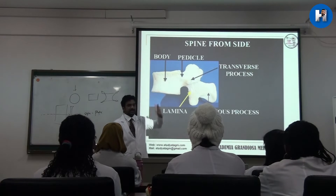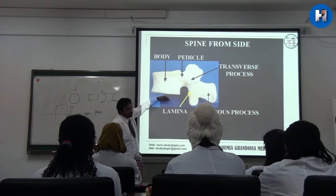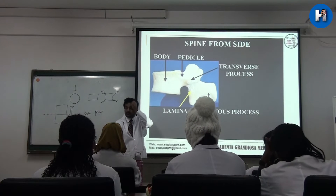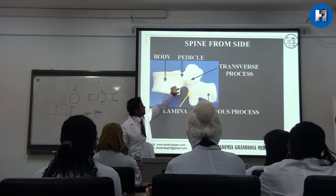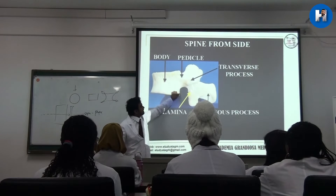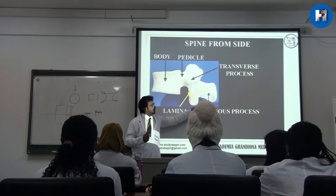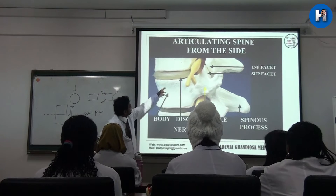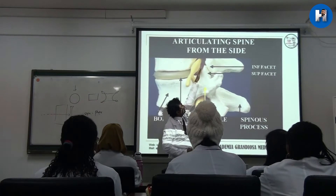Now in the side view — lateral view — you can see the body, then the intervertebral disc, and the space we call the intervertebral foramen. The intervertebral foramen is bound anteriorly by part of the body and the intervertebral disc, another part of the body, two pedicles, a little bit of lamina, and there will be a facet joint.